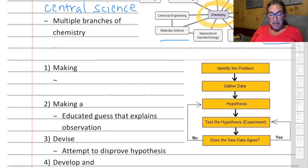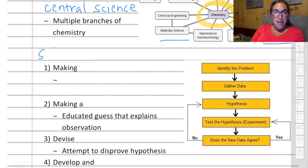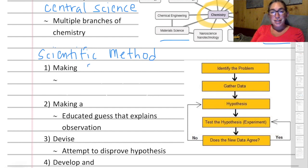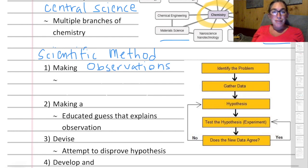All sciences rely on research, and research is conducted through a systematic, stepwise process known as the scientific method. The first step of the scientific method is actually making observations — observations about the world around you, about phenomena or processes that you see that you don't have an explanation for.